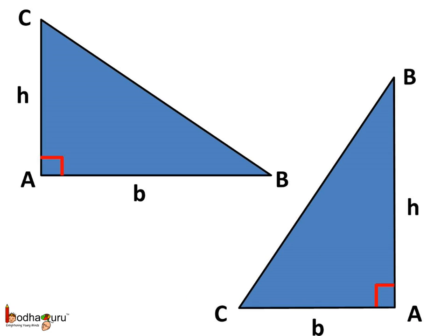So amongst the two arms of the right angle, which is the base and which is the perpendicular depends on how the triangle is drawn.